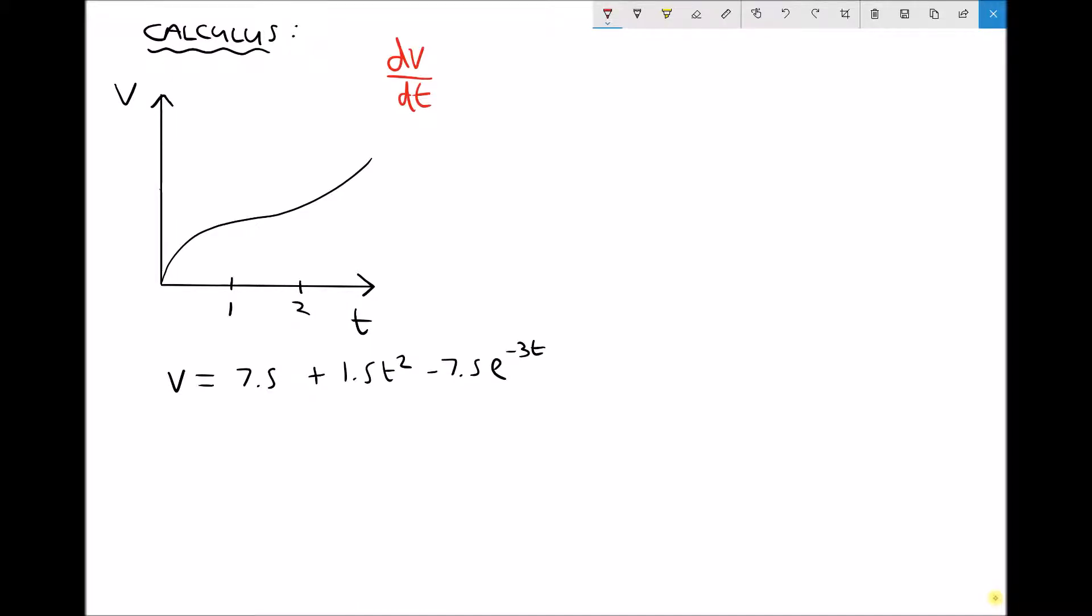So dv by dt would give us the gradient at any point on this graph. Now if we just inspect that term dv by dt, change in velocity with respect to time is acceleration. So we could differentiate our velocity function in order to find the acceleration at given times.